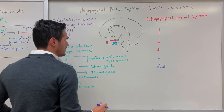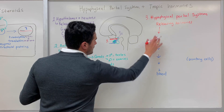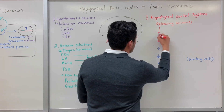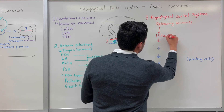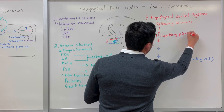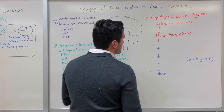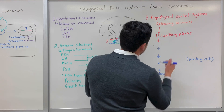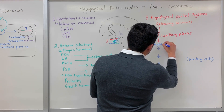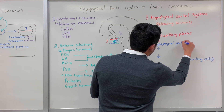Let's take a closer look at the hypophyseal portal system. To get into the portal system, the releasing hormones first have to enter what's known as the primary capillary plexus, and from there they enter the hypophyseal portal vein.